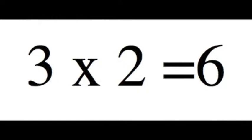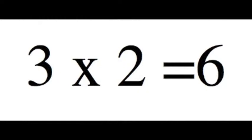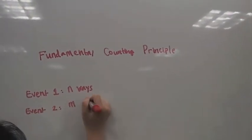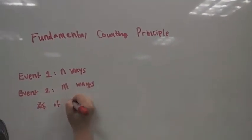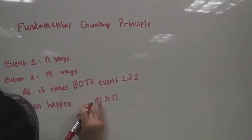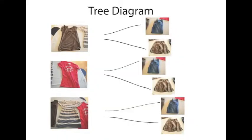The reason why we multiplied three and two is because if one event can occur in M ways and another event can occur in N ways, then the number of ways that both events can occur is M times N. So we multiply three tops by two bottoms to make a total of six choices of outfits.